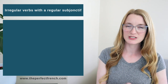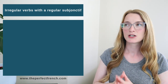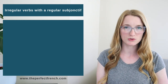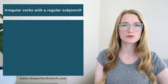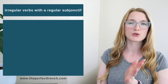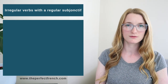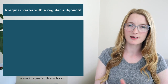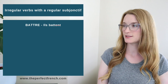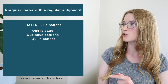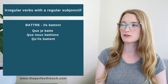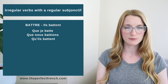The good news is that a lot of the irregular verbs are going to be regular in the subjonctif. So as long as you know the conjugation in the present tense for them, you will be able to conjugate them in the subjonctif. For example, the verbs ending in -ttre, such as battre: ils battent in the present tense. We are going to have que je batte, que nous battions, qu'il batte. It works as well for all the verbs conjugated the same way.